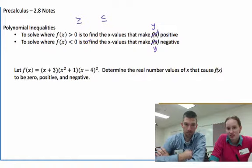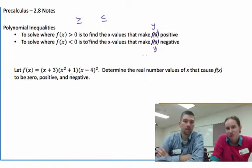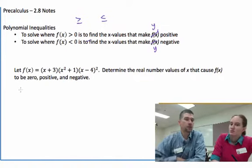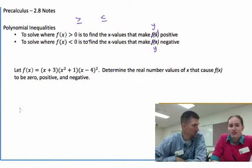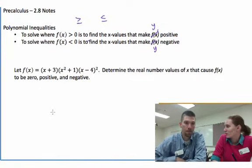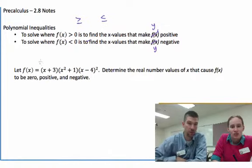Example number one, let f(x) equal all of this. Let's determine the real number values of x that cause f(x) to be zero, positive, and negative. Can we do one of those sign chart things? I think a sign chart would be a fabulous idea. Yeah, I love sign charts. So what we care about with sign charts is where each part of this equals 0.